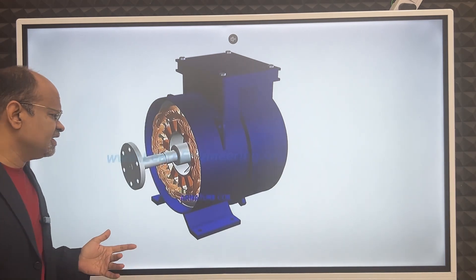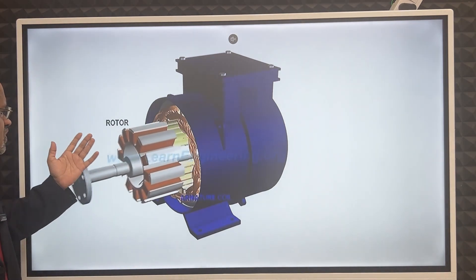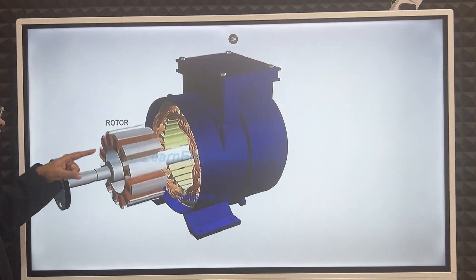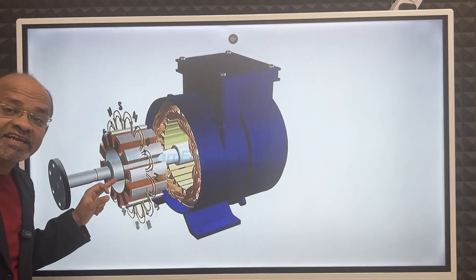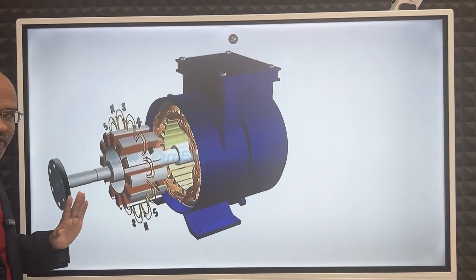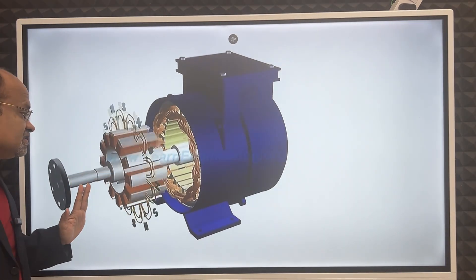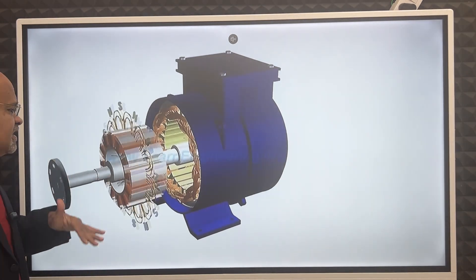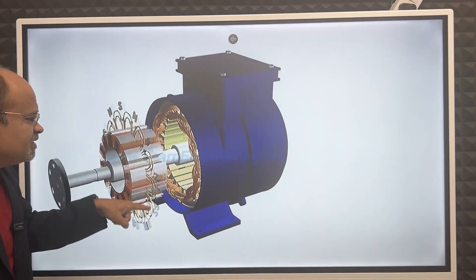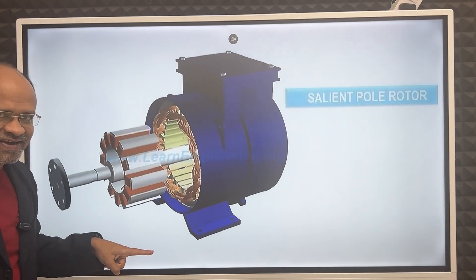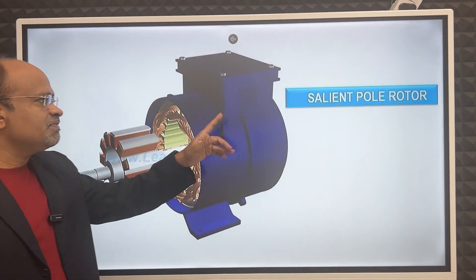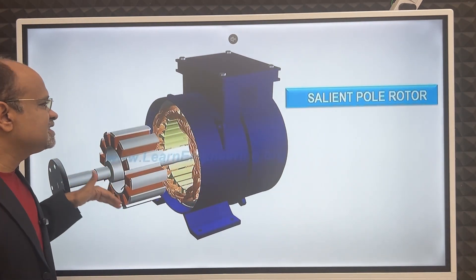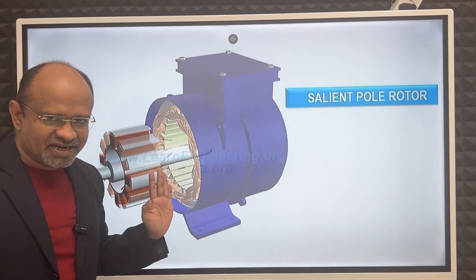Looking at the rotor construction — the rotor is rotating and we get the magnetic field with north-south poles, 120 degrees apart in phase. This rotating magnetic field passes through stationary armature coils, which produce electricity. This type is called a salient pole rotor.